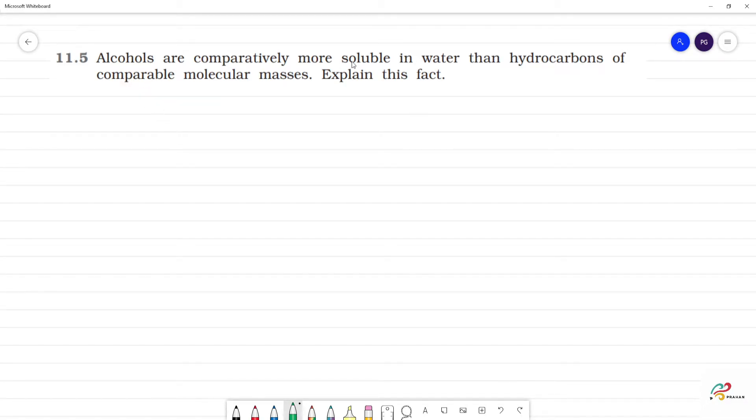Alcohols are comparatively more soluble in water than hydrocarbons of comparable molecular masses. We can take an example of alcohol. CH3-CH2-OH, so this is soluble in water.